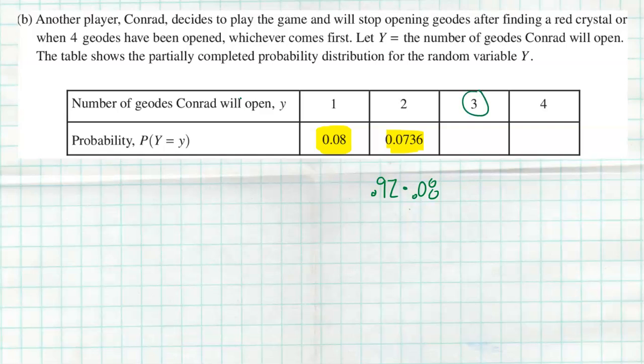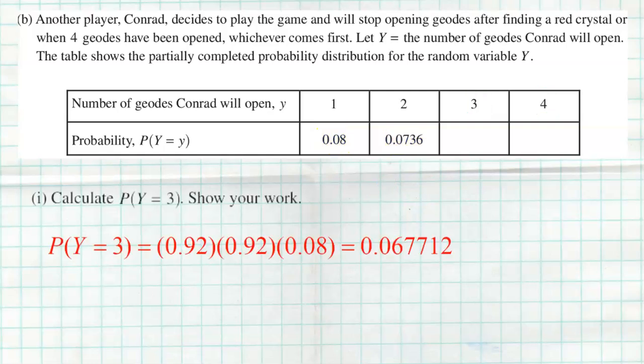The next two entries — for Y=3 and Y=4 — are blank, and that's what they ask us to calculate. For P(Y=3): the only way he opens exactly three geodes is if the first is not red, the second is not red, and then the third is red. So we multiply 0.92 × 0.92 × 0.08 and we get 0.067712, which you could round to 0.0677. We can fill that value in the table.